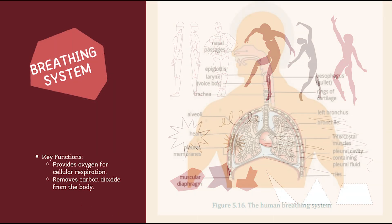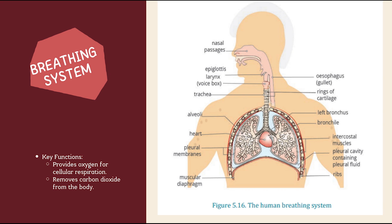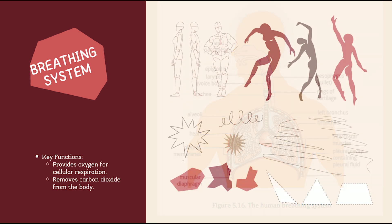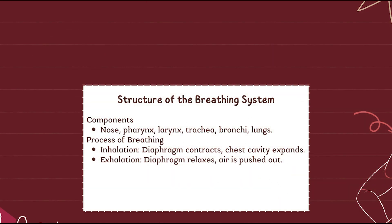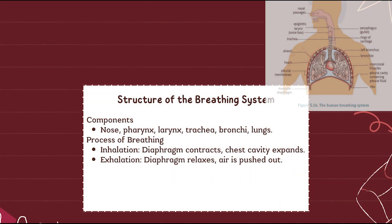The breathing system, also called the respiratory system, supplies oxygen for cellular respiration and removes carbon dioxide as a waste product. Without oxygen, cells cannot produce the energy they need. Air flows through: nose → pharynx → larynx → trachea → bronchi → lungs.